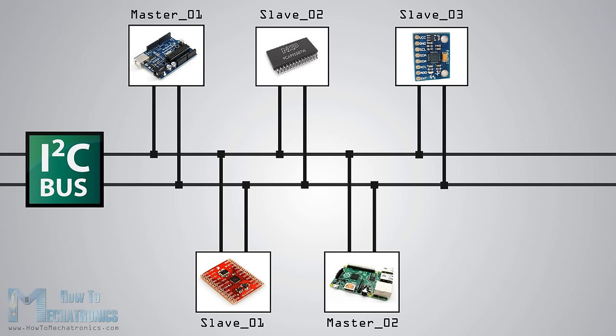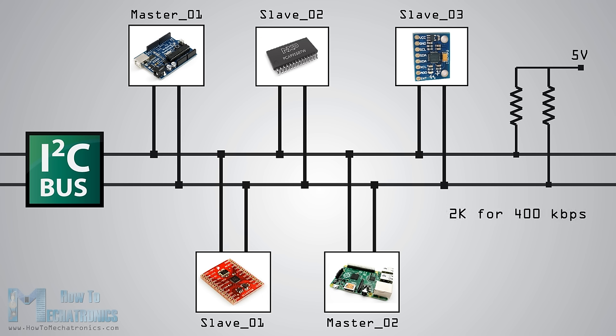The two lines are open drain, which means that pull-up resistors need to be attached to them so that the lines are high, because the devices on the I2C bus are active low. Commonly used values for the resistors are from 2k for higher speeds at about 400 kilobits per second up to 10k for lower speeds at about 100 kilobits per second.